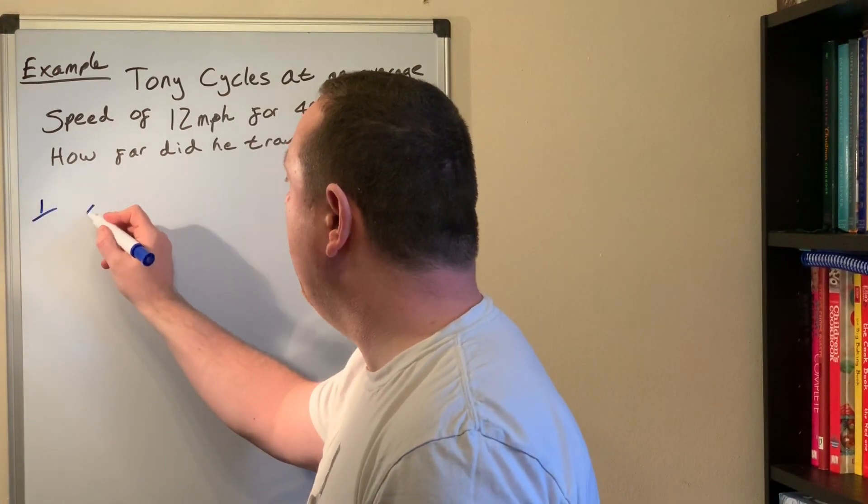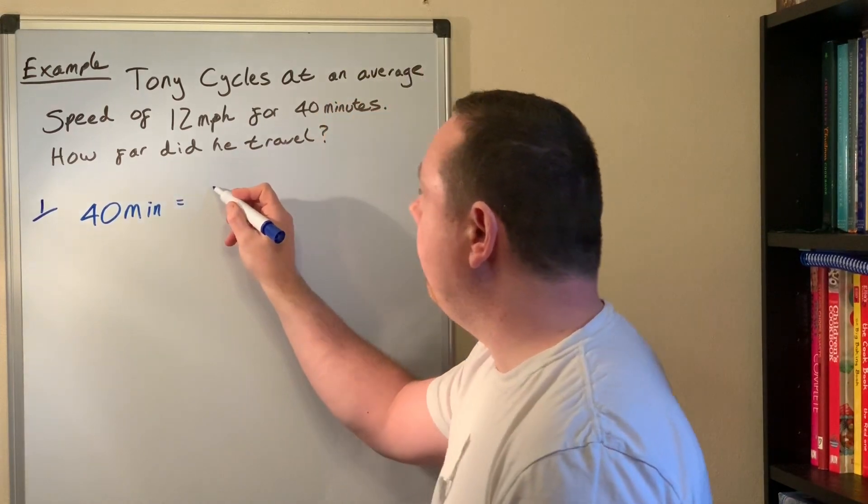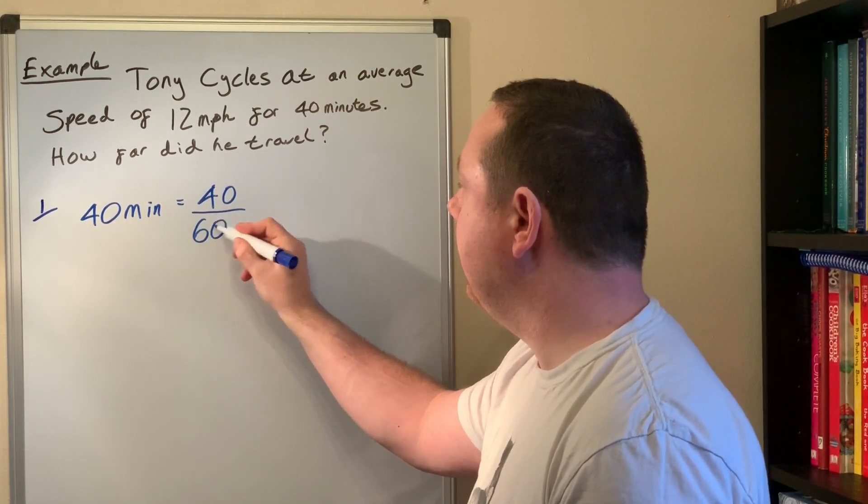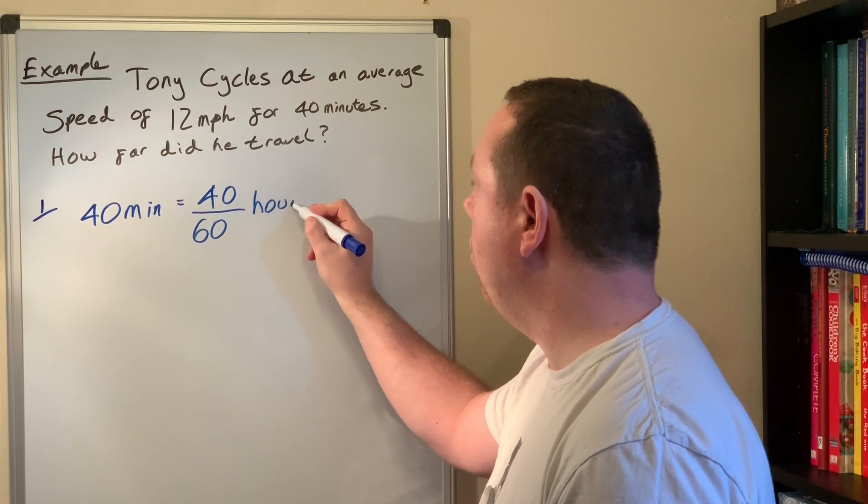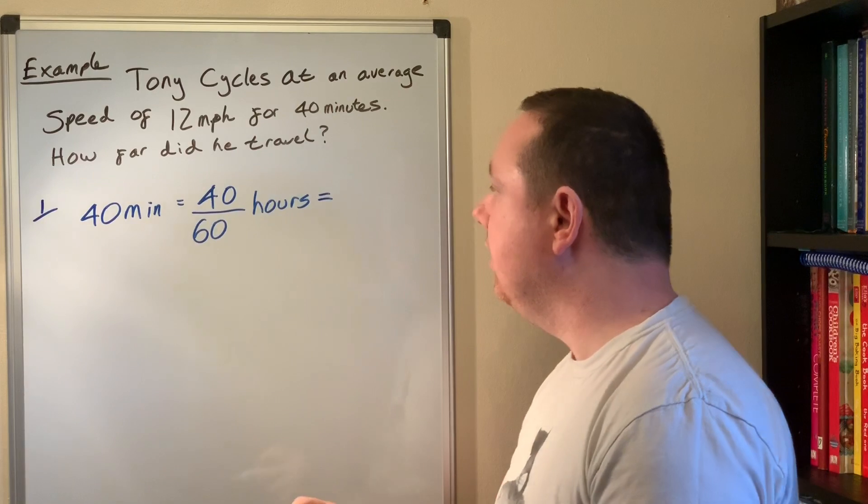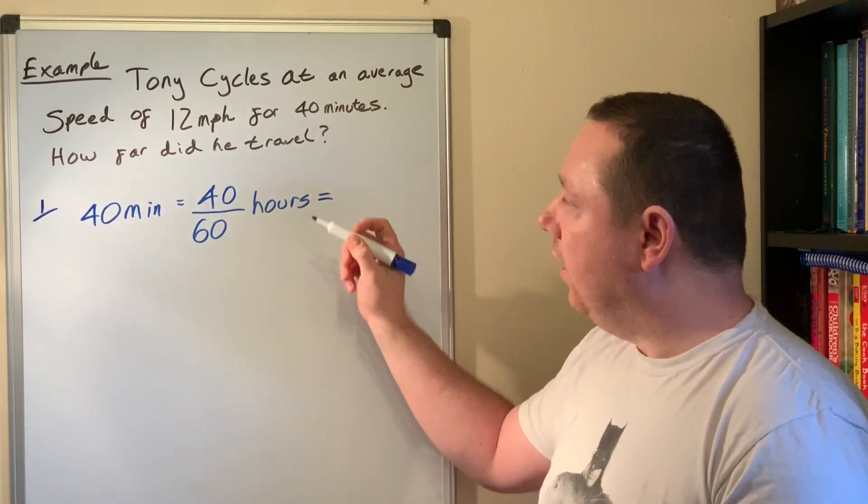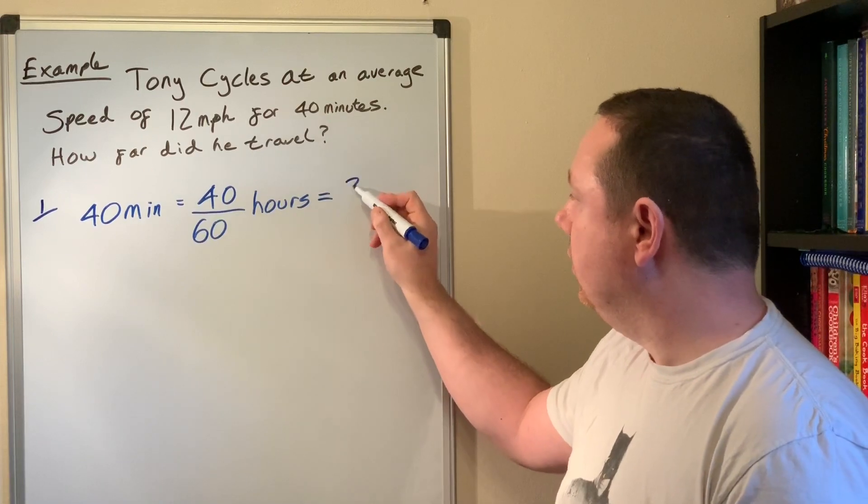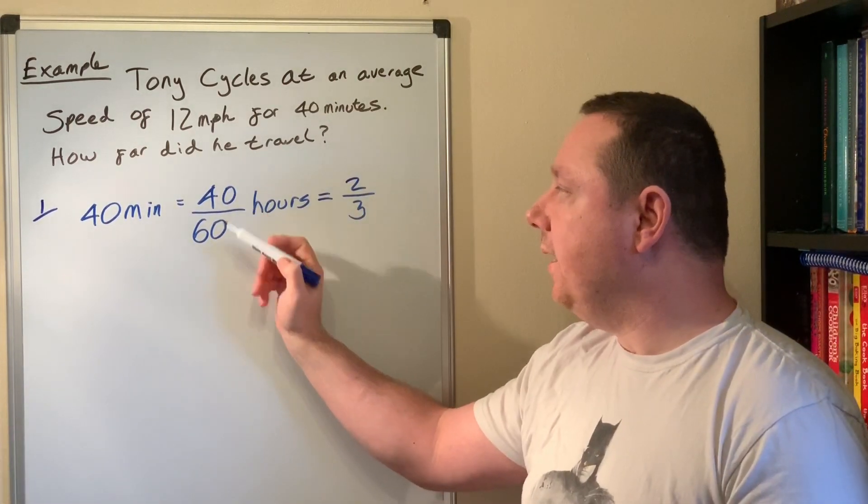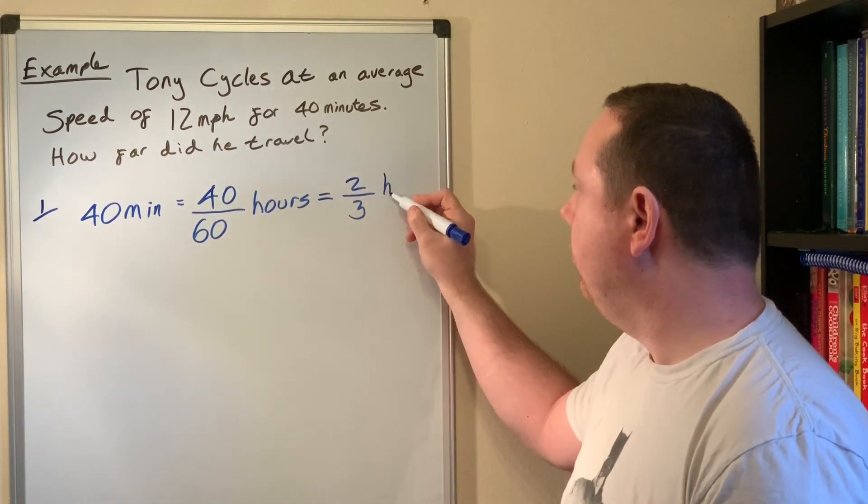So step one: 40 minutes equals 40 out of 60 hours, always out of 60. Simplifying my fraction I can divide the top and bottom so I get two thirds hours.